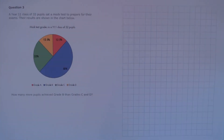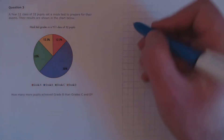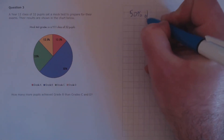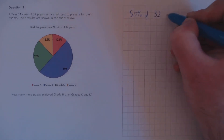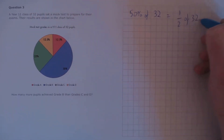Question 3. A Year 11 class of 32 pupils sat a mock test to prepare for their exams. Their results are shown in the chart below. How many more pupils achieved Grade B than Grade C and D? To calculate Grade B, we need 50% of the total 32 — that's simply a half of 32, which is 16.